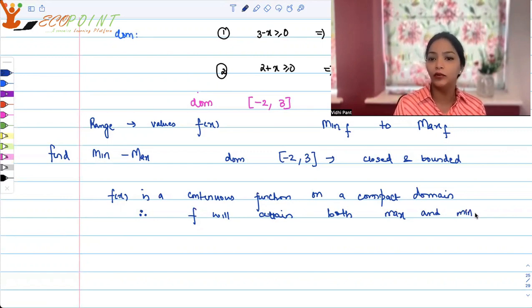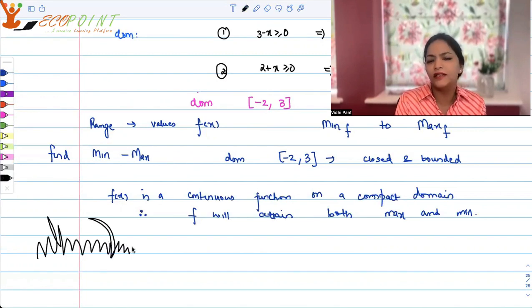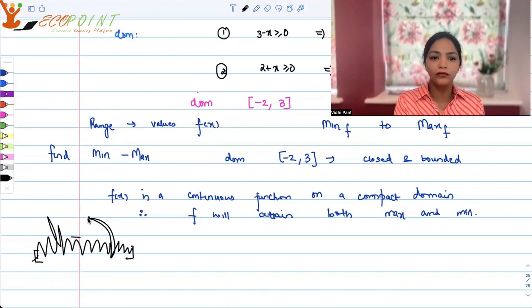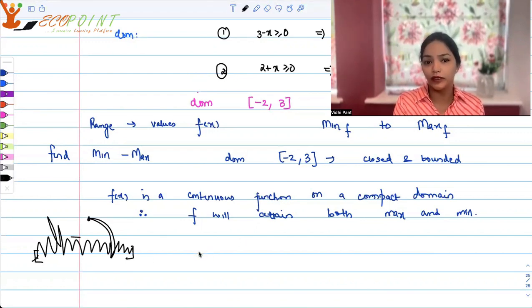Therefore, f will attain both max and min in the domain. f will definitely attain both max and min. It's a very logical thing. You have a function. It's continuous, whether it's differentiable or not. This one is differentiable. It's a continuous function with no breaks. Then, of course, it will attain some highest peak somewhere and some lowest value somewhere.